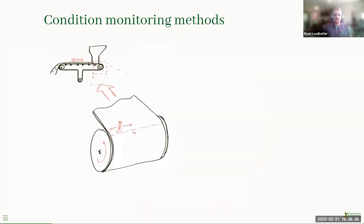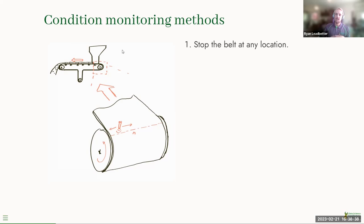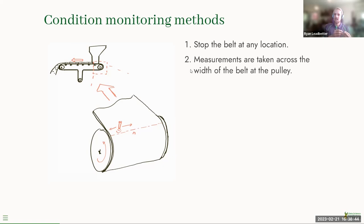The way they do this — this is my very technical drawing — we can see an overland conveyor belt schematic transporting ore from left to right. They stop the conveyor belt, and then at the head pulley they take ultrasonic thickness measurements across the width of the belt.